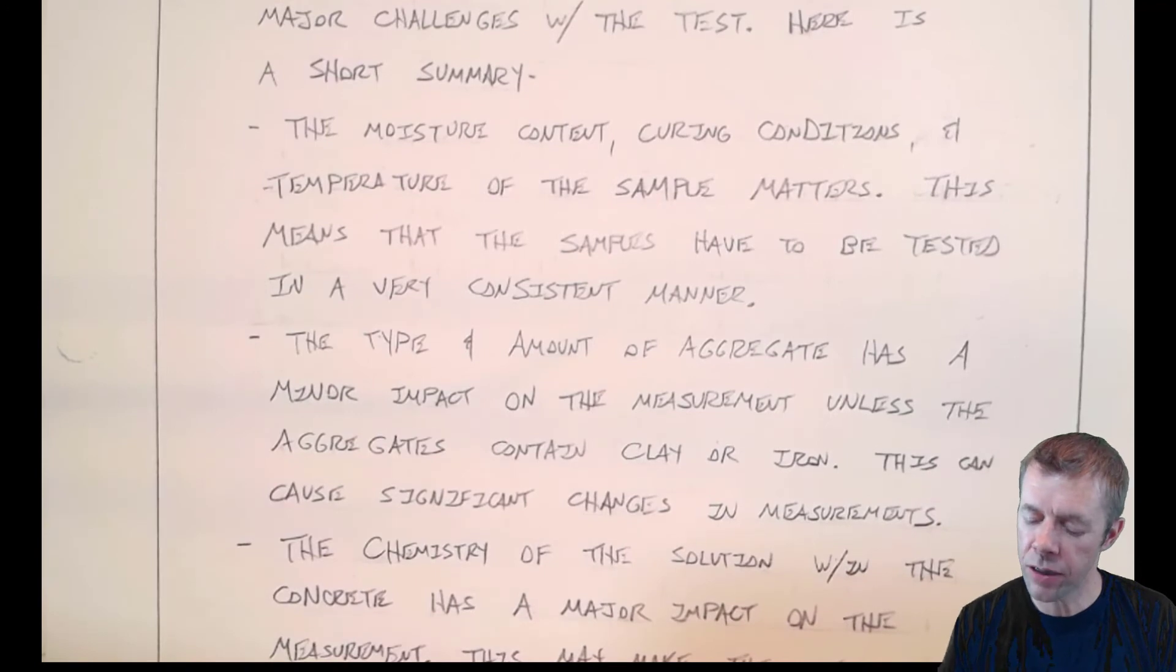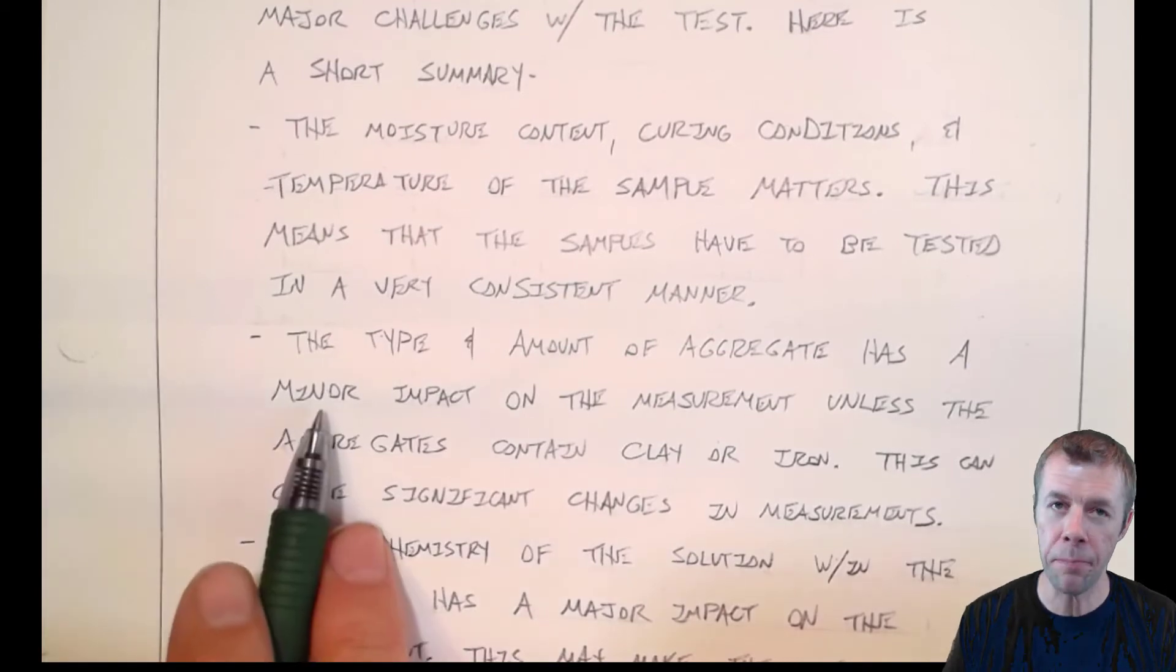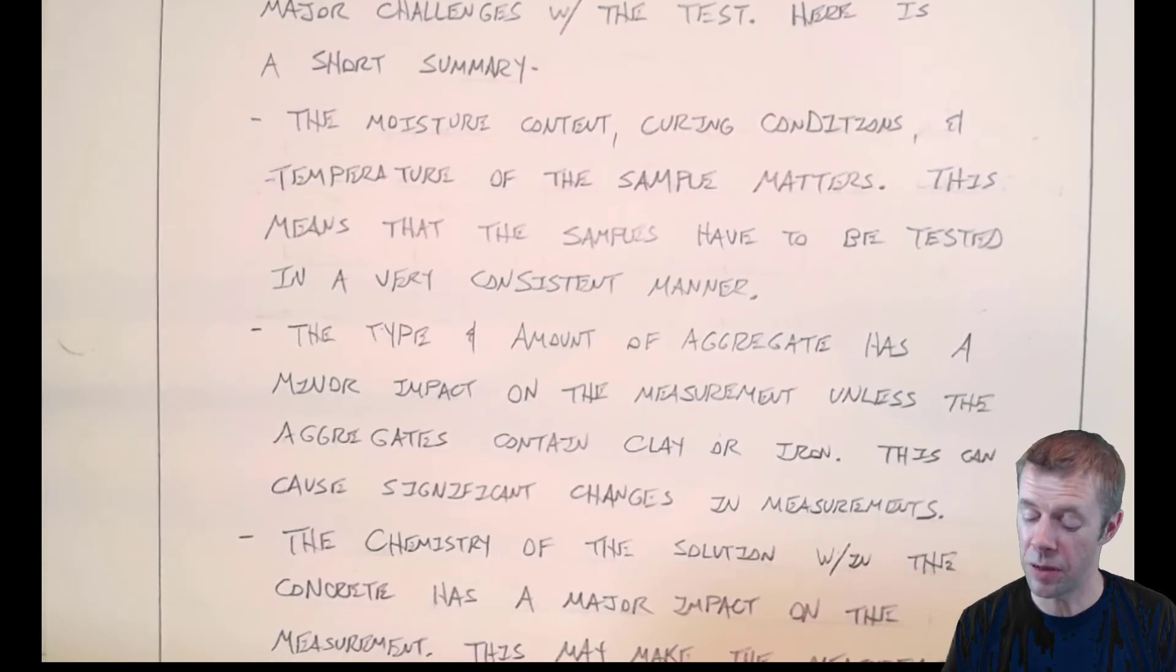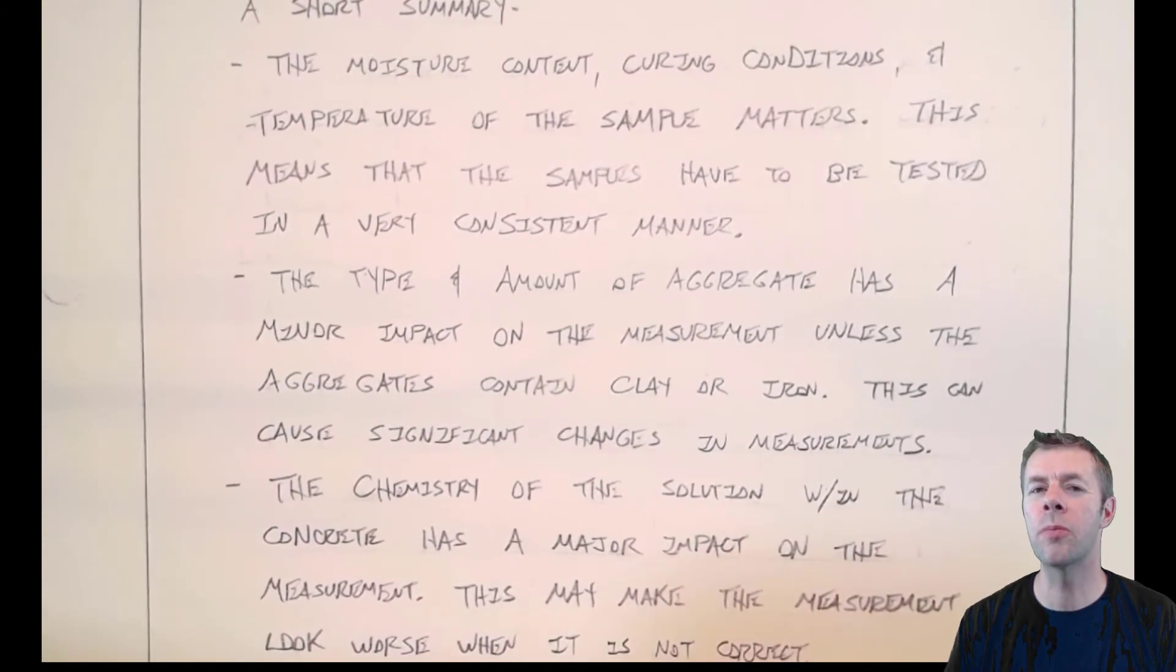Also, the type and amount of aggregate has a minor impact on the measurement, unless the aggregate contains clay or iron. This can cause significant changes in the measurements, and people need to watch out for that. But again, I'm not sure that's a big deal. I'm not sure that's a deal breaker. Because most of the time, you'd be using a very consistent aggregate. Or if your aggregates did have one of these funny things in them, maybe you could correct for them.